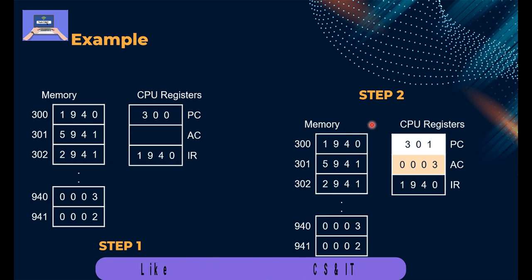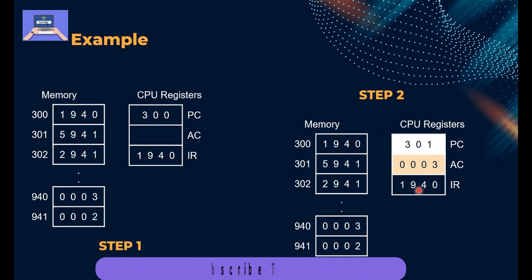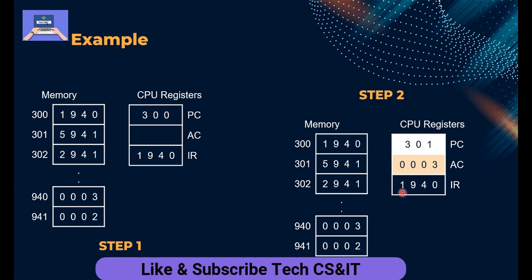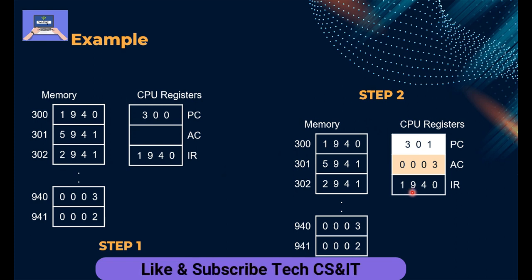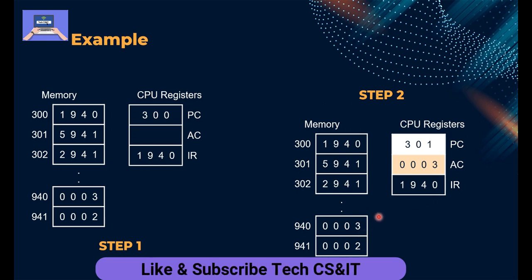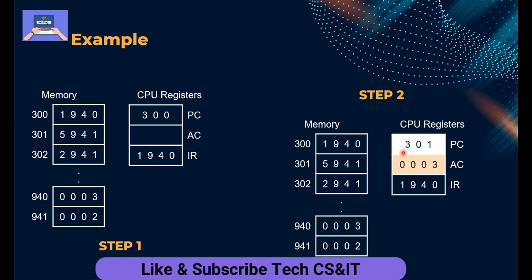In step two, when we execute the data in the IR, we find that opcode 1 means load into the accumulator register from memory. The address is 940, which holds 0003. So opcode 1 means load from memory into the accumulator, so 0003 moves into the accumulator register. Execution completes, and then the program counter updates from 300 to 301.